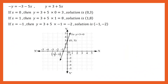To draw the graph of the equation, we find the value of y in terms of x. Therefore, y is equal to 3 plus 5x. Giving different values for x: if x is equal to 0, y is equal to 3; if x is equal to 1, y is equal to 8; and if x is equal to negative 1, y is equal to negative 2. Therefore, the solutions are (0, 3), (1, 8), and (negative 1, negative 2). Plotting these points on the graph paper, we can see a straight line representing the given equation.